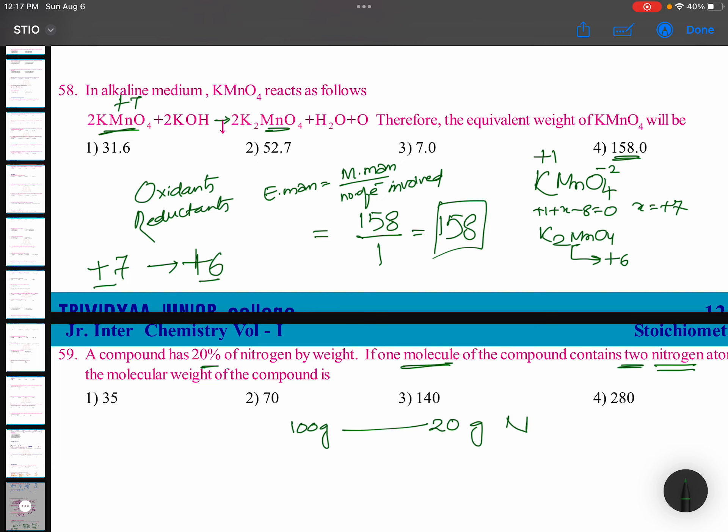Now, one nitrogen is 14, two nitrogen means 28 grams is mandated because two nitrogen atoms are present. So, 28 grams is mandated. So, how much is it going to be? 28 into 100 by 20.